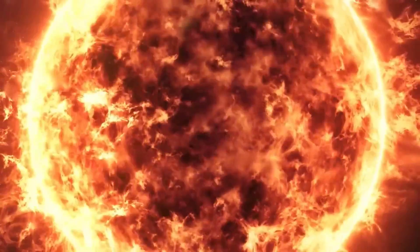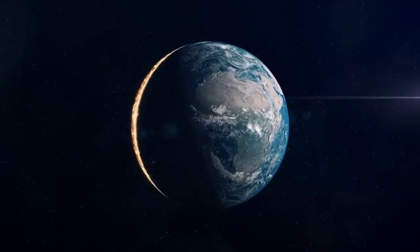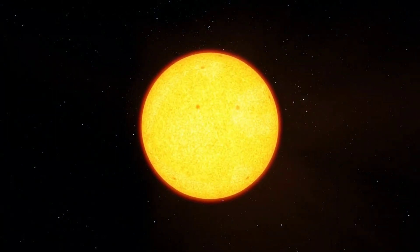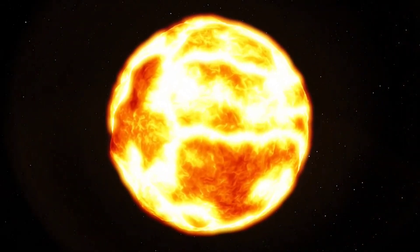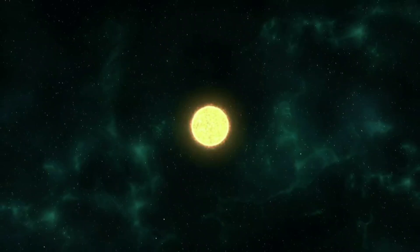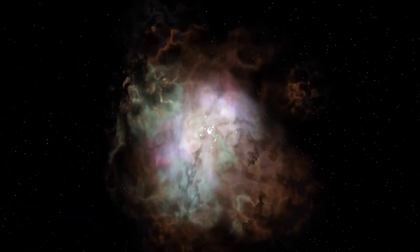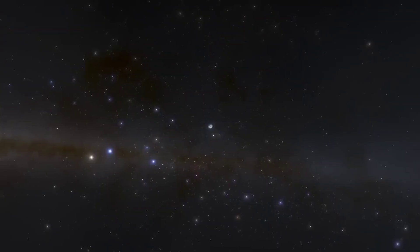The Sun will also lose mass and gravity, causing the outer planets' orbits to widen and become more eccentric. In about 8 billion years, the Sun will shed its outer layers, forming a planetary nebula, a cloud of gas and dust that surrounds the core. The core will become a white dwarf, a small and dense remnant that will slowly cool and fade over time. The white dwarf will be about the size of the Earth but with the Sun's mass. It will emit a faint and steady light but will not have any nuclear reactions.